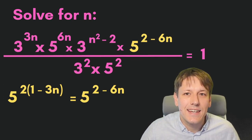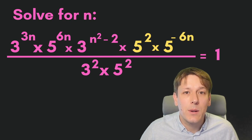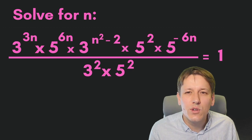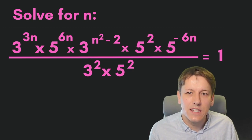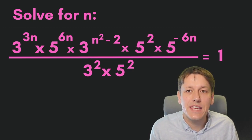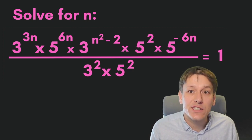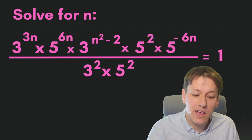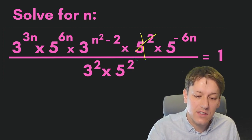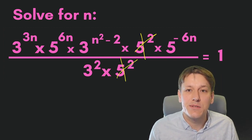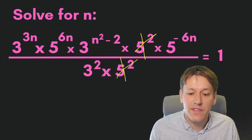So let's replace that, and whilst we're there let's split up that power and write it as 5 to the 2 times 5 to the minus 6n. Now if you look at this carefully, you might notice that this question has been very carefully designed because we can cancel out some of the powers of 5 — in fact all of the powers of 5. I've got 5 squared here top and bottom, so divide top and bottom of the fraction by 5 squared and they cancel out.